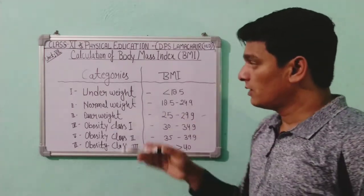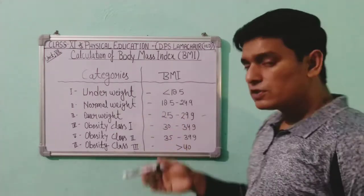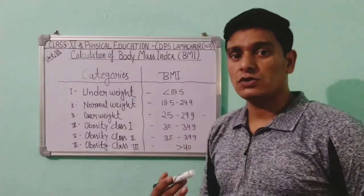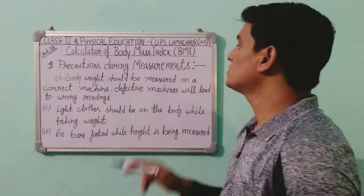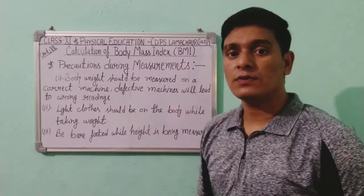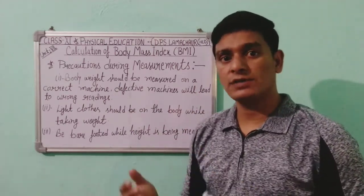Apart from this table, there is also a larger BMI chart shown on screen. With the help of this chart, you can easily find out your BMI and which category you are in. The BMI can be calculated in a very easy manner using this chart.